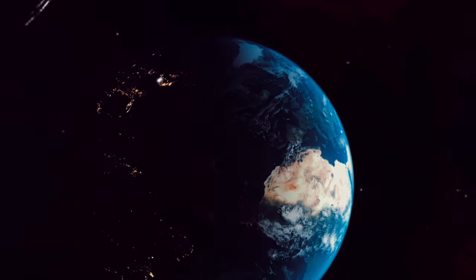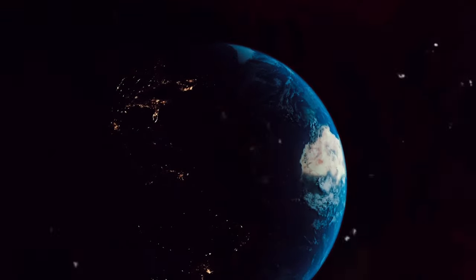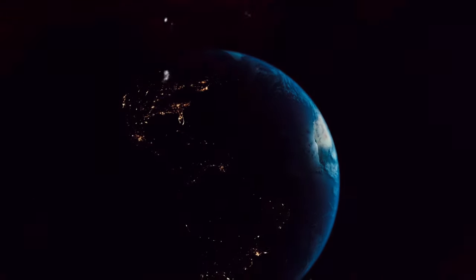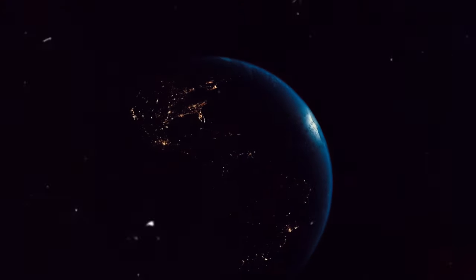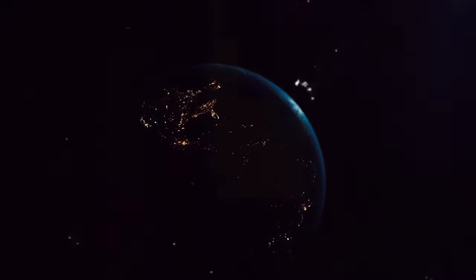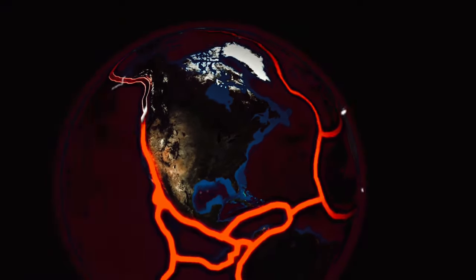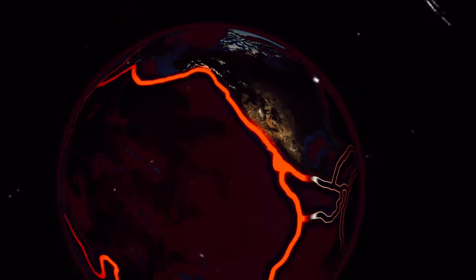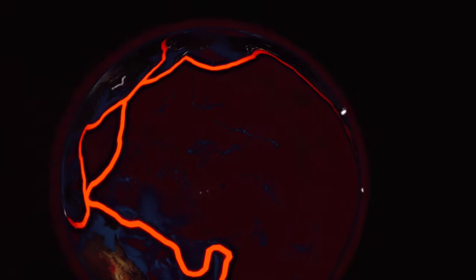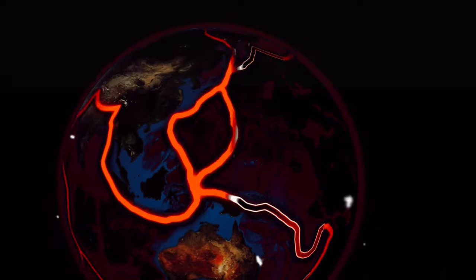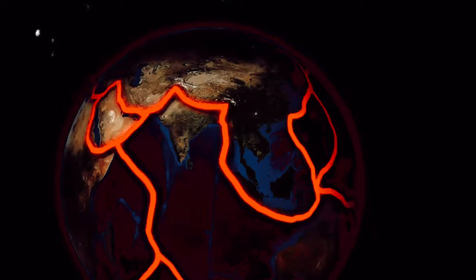Picture this: the Earth's core spinning right beneath your feet. A mesmerizing thought, isn't it? Our planet's core isn't a static lump of metal. It's in constant motion, spinning around an axis just like the Earth's surface. The Earth's core is separated into two parts: the solid inner core and the liquid outer core. Both layers rotate, but they do so at different speeds.